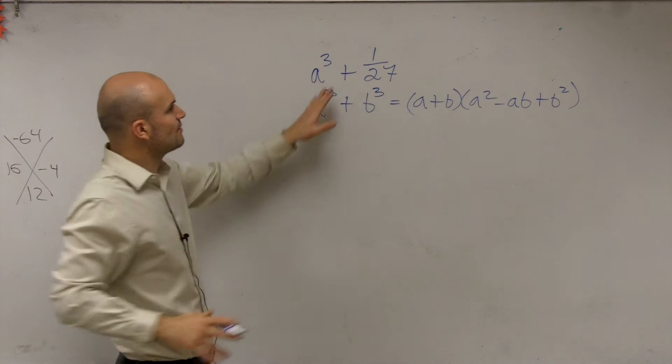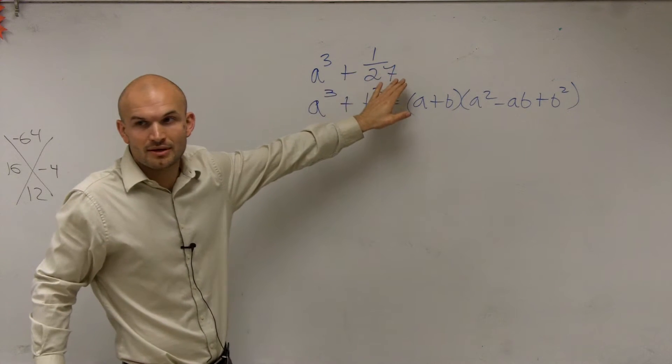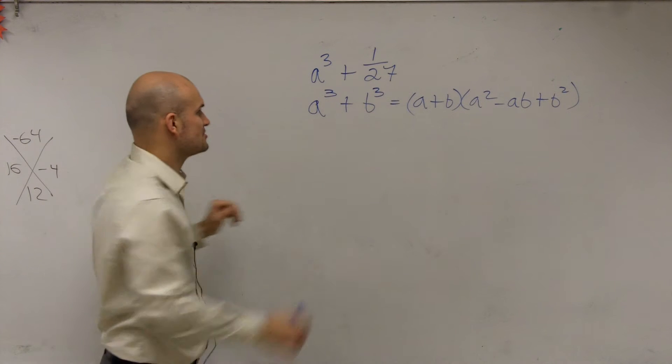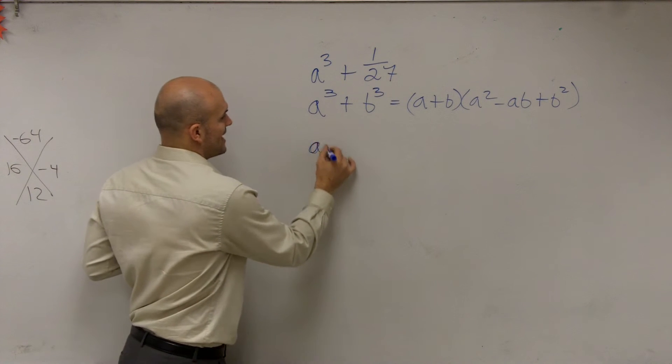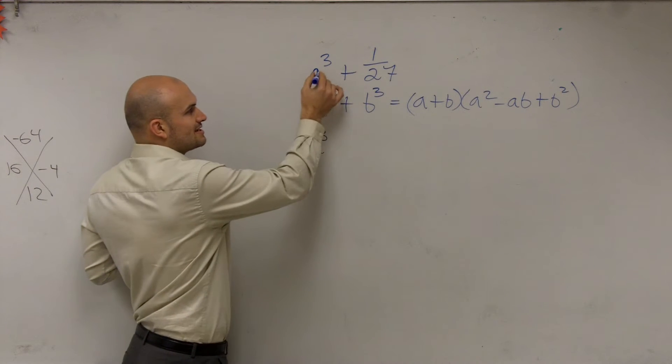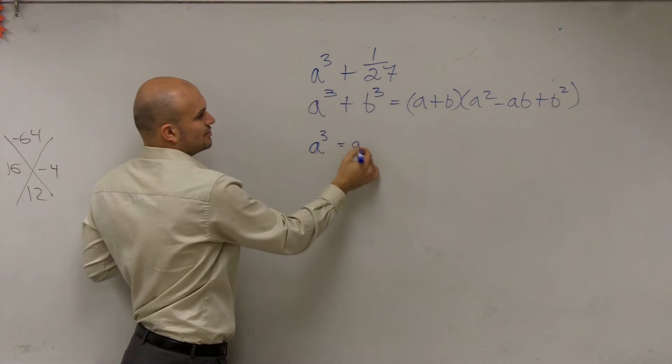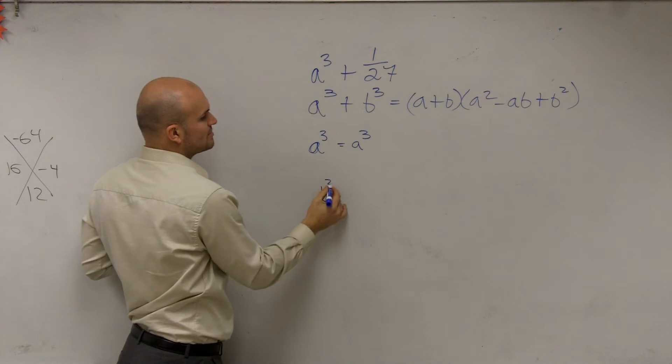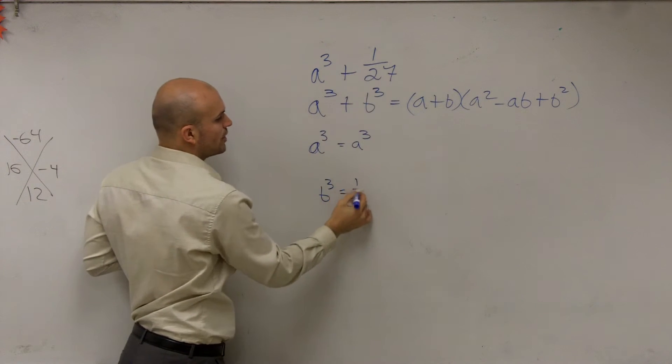Can we write these terms as factored terms? a³ is going to equal this one, which is a³. Then our b³ is our second term, which equals 1 over 27.